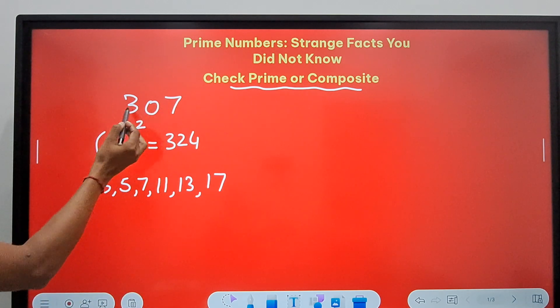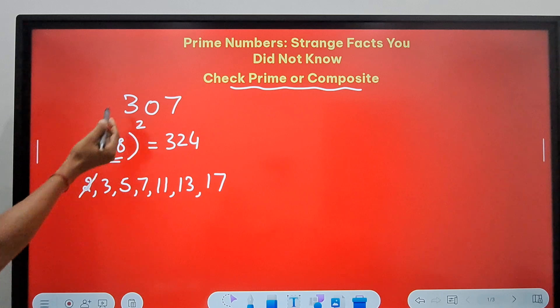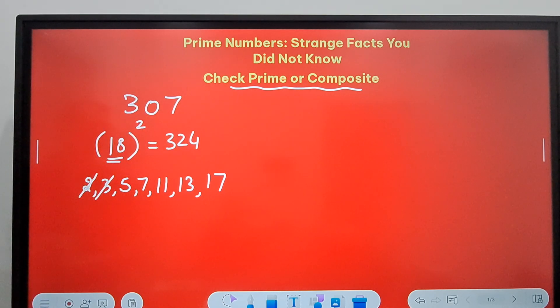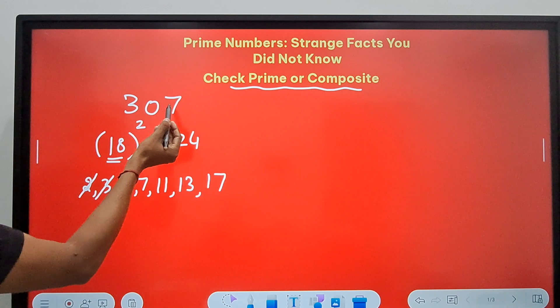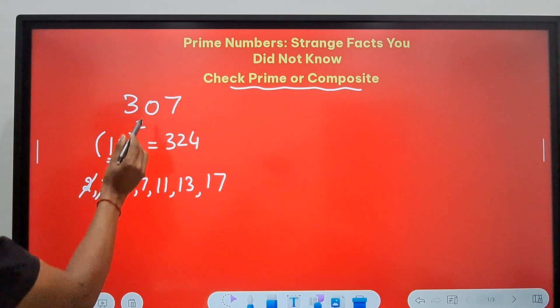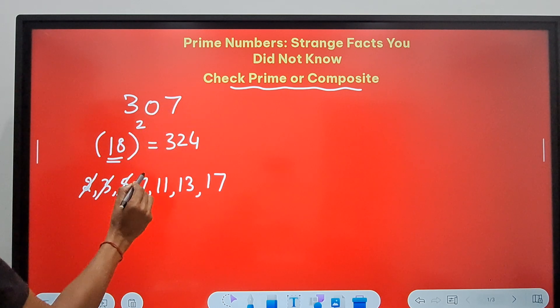Obviously it's not divisible by 2 because it's an odd number. For 3, 7 plus 3 is 10, so not divisible by 3. For 5, it doesn't end with 0 or 5, so not divisible by 5. For 7, 7 times 4 is 28, so 27, not divisible by 7.